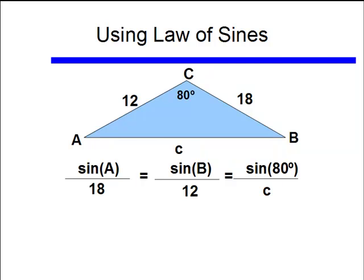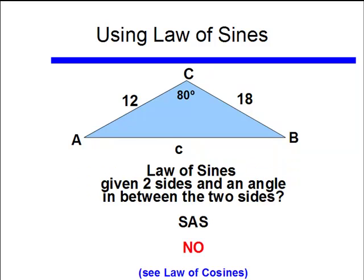And I have the exact same problem that I did when I looked at the three sides. There's no way I can make an equation with just one unknown, so I'm not going to be able to use the law of sines if I'm given a side, an angle, and a side—that is, an angle between two sides. We'll again be using the law of cosines for that.